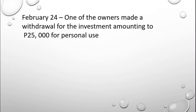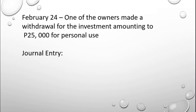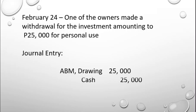On February 24, one of the owners made a withdrawal from their investment amounting to ₱25,000 for personal use. The journal entry is: debit ABM Drawing ₱25,000 and credit Cash ₱25,000. Cash decreases by ₱25,000 as a result of this drawing transaction, and the owner's capital is also reduced.